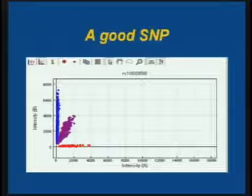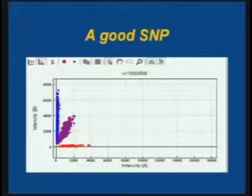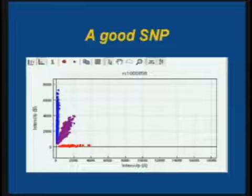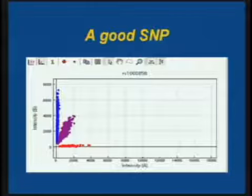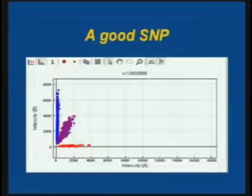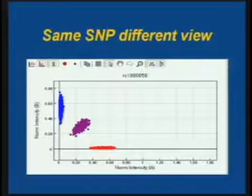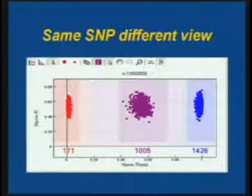This is a good SNP. This is Illumina data, and you've got intensity for samples — each point is one sample for a particular SNP. The samples here only have intensity for the A allele. The samples in blue only have intensity for the B allele. And the purple ones have intensity for both — those are the heterozygotes. This is a very nice SNP; there's very good clustering. These are basically the raw intensities on the two axes. This is a slightly different view, put through a transformation, more or less normal. And then another view of the same SNP where the Cartesian coordinates have been flipped to make a polar coordinate.